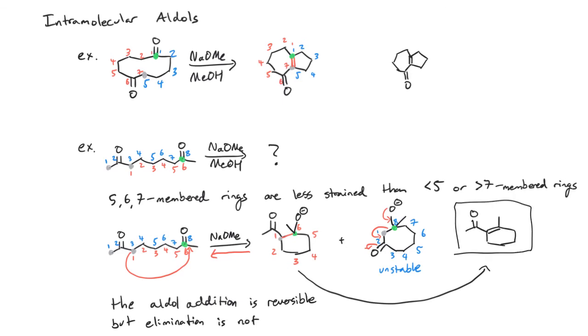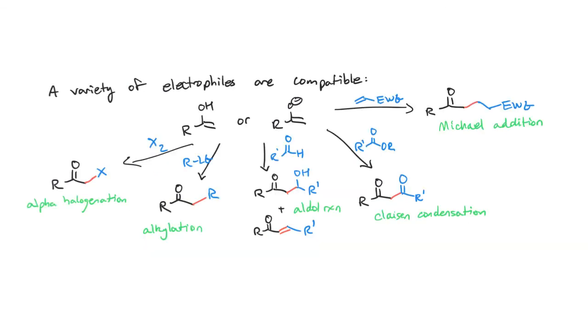Once we get to this very stable aldol condensation product, we're stuck here. Even if any eight-membered ring formed, it would likely go back to the original open chain form, and then that could cyclize back to the six-membered ring. Awesome. That takes us through the aldol reaction.